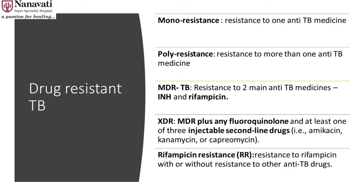When we talk about MDR-TB we are basically talking about resistance to the two basic drugs of TB treatment, that is INH and rifampicin. Any bug that is resistant to both INH and rifampicin is called MDR-TB. Then we have various other definitions like mono resistance where you are resistant to one drug, and poly resistance where you are resistant to more than one drug, apart from INH and rifampicin.